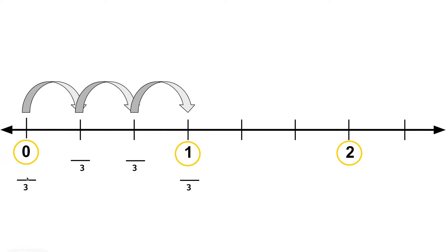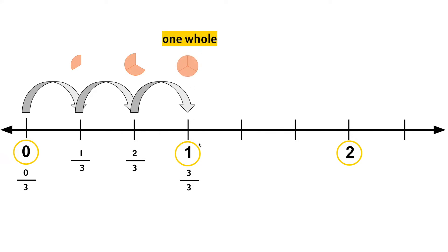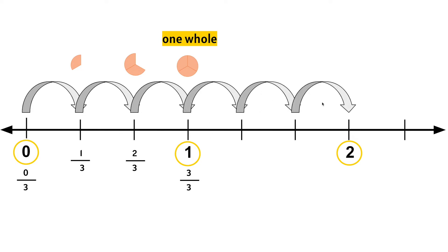At 0, we know we have 0 thirds or no thirds. At the first tick mark, we know we have 1/3. The next tick mark is 2/3. If we travel over one more tick mark, we know we have 3/3. 3/3 makes 1 whole. Now remember, the spacing or the equal parts between the whole numbers will be the same. So let's count: 1, 2, 3. The spacing is the same as it was from 0 to 1.